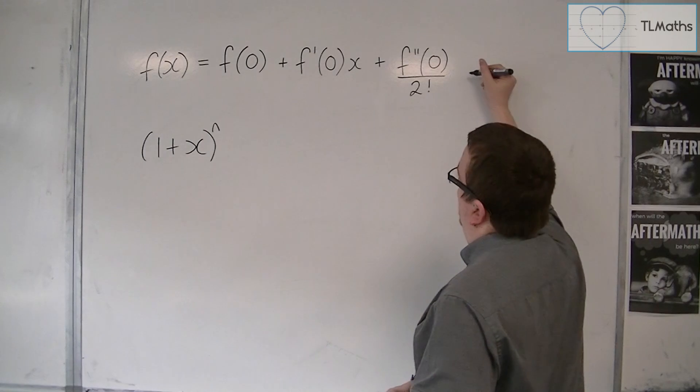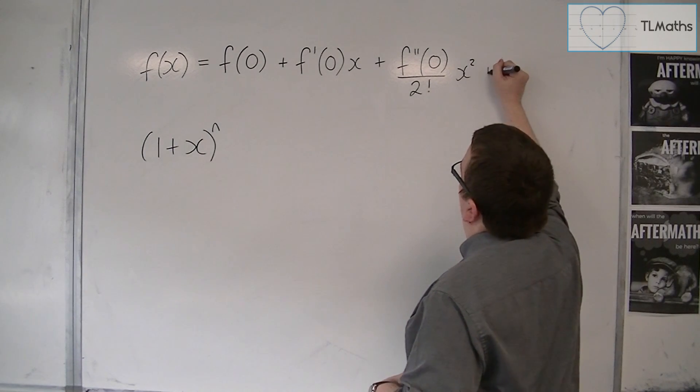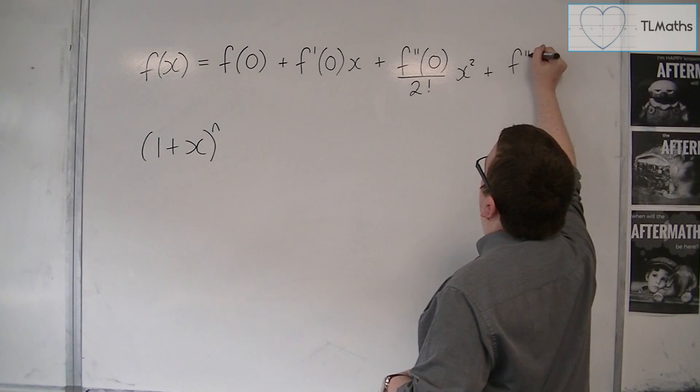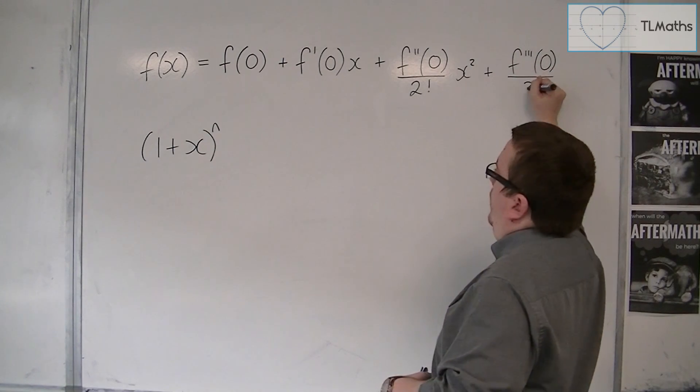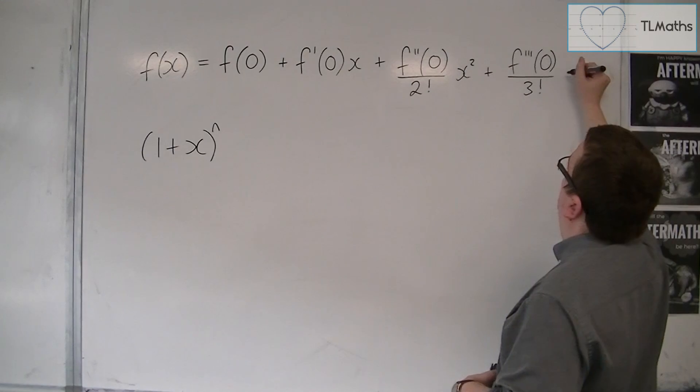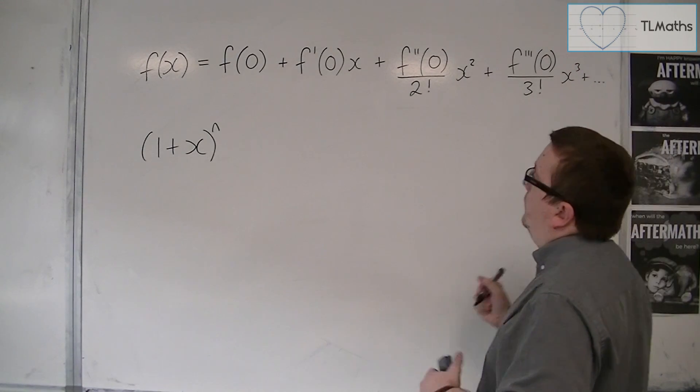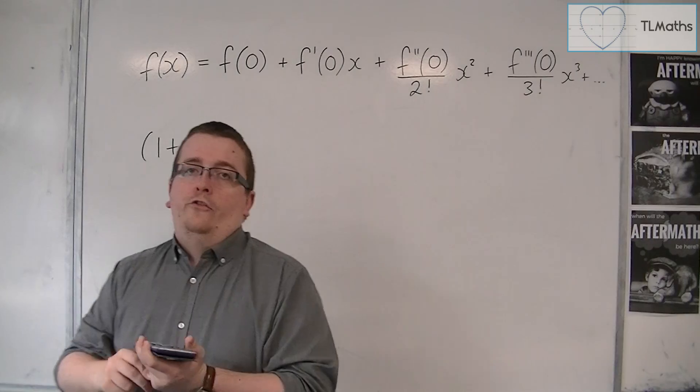2 factorial x squared plus the third derivative evaluated at 0 over 3 factorial x cubed. And you can see how this is going, and it goes on and on and on forever.